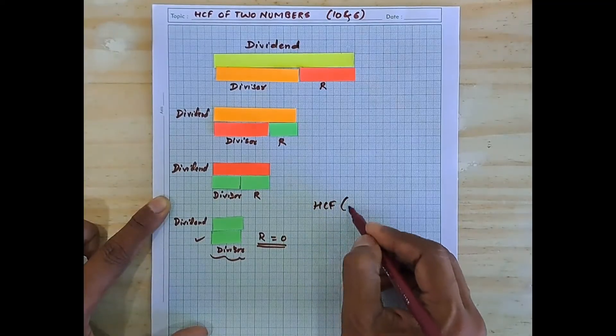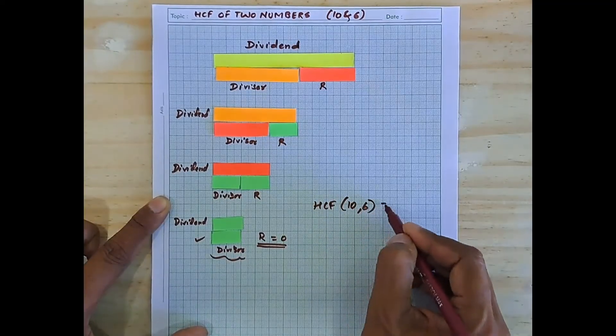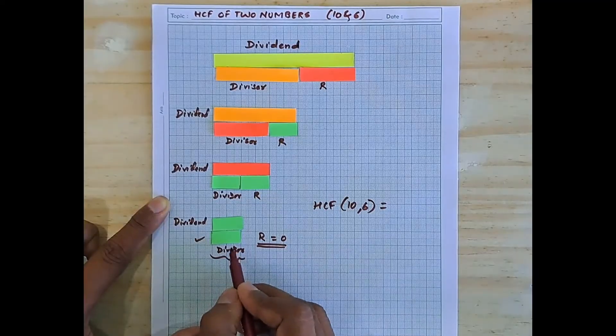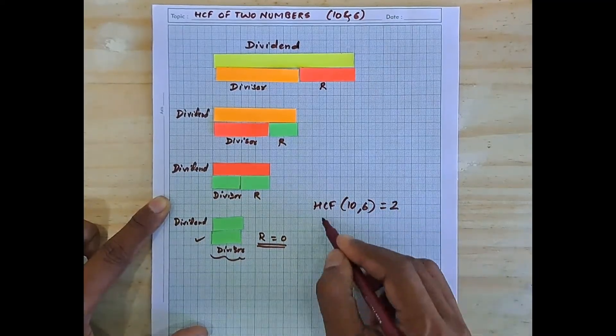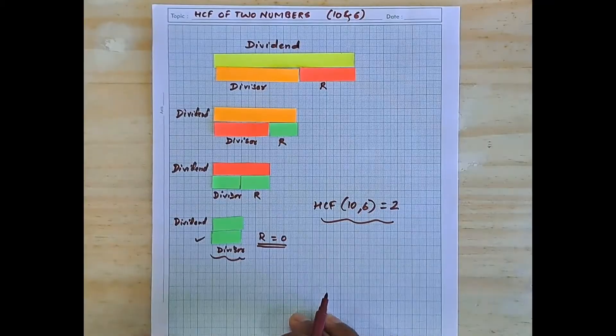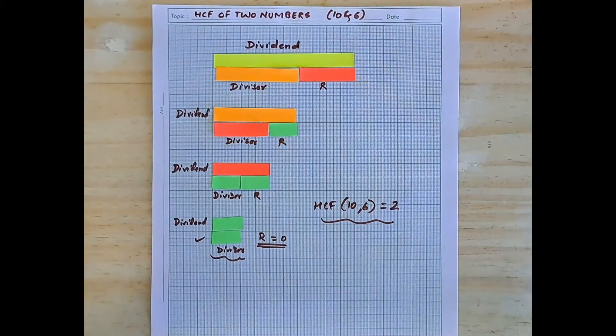So the HCF of 10 and 6 is this divisor, length of this divisor that is 2. And that is the experimental verification of HCF of the numbers 10 and 6.